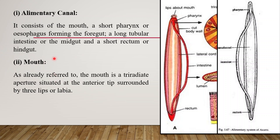The second organ of digestion is the mouth. The mouth is tri-radiate — a tri-radiate aperture situated at the anterior tip, surrounded by three lips or labia that guard the aperture. Three lips are present forming a triangular opening. The mouth is tri-radiate, which is guarded by the three lips or labia.